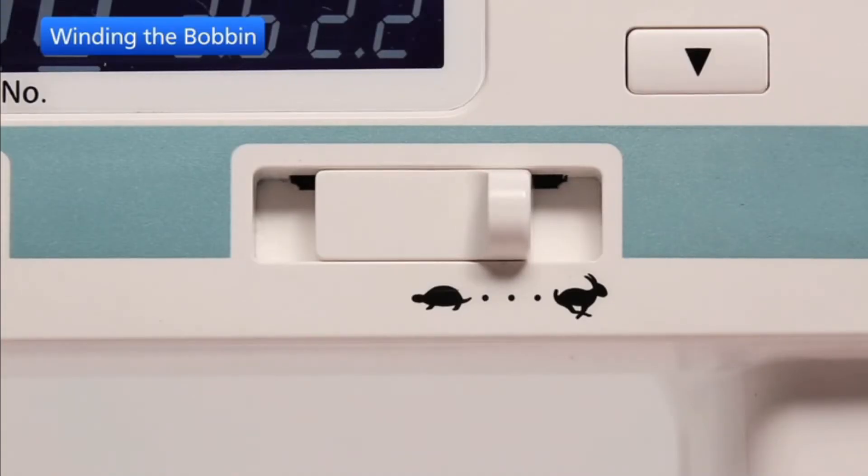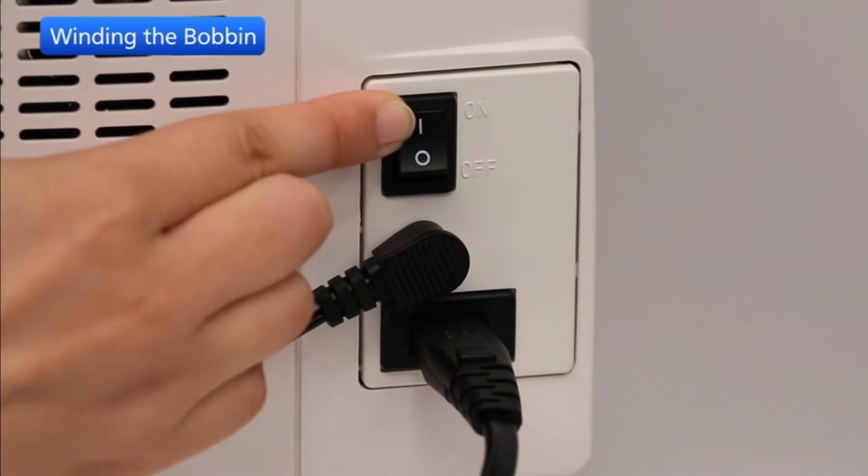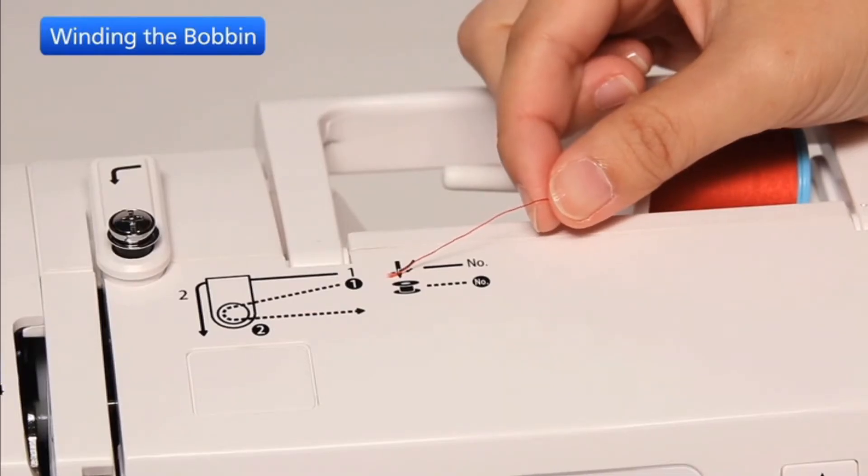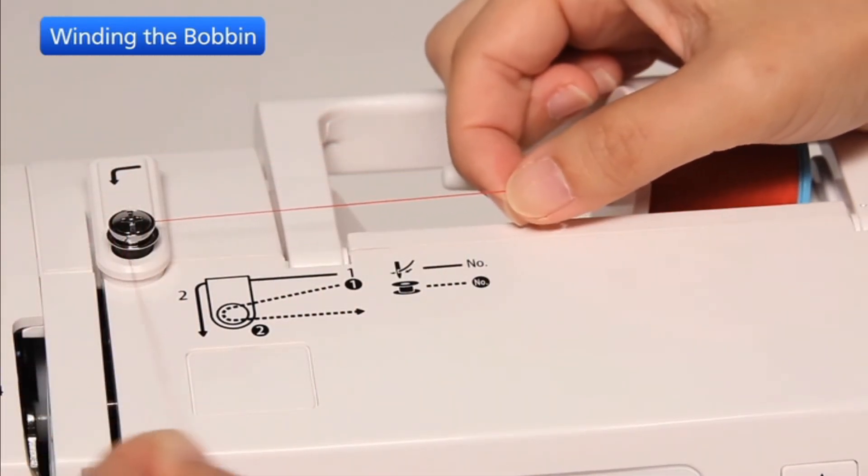Set the speed control slider at its fastest position for bobbin winding. Turn on the power switch. Draw the thread from the spool and pass the thread around the bobbin winding tension disc.